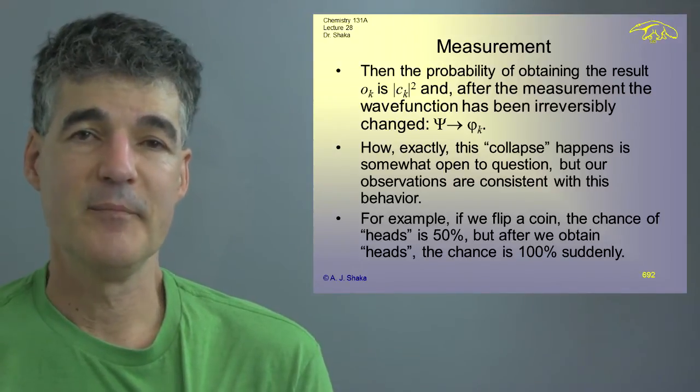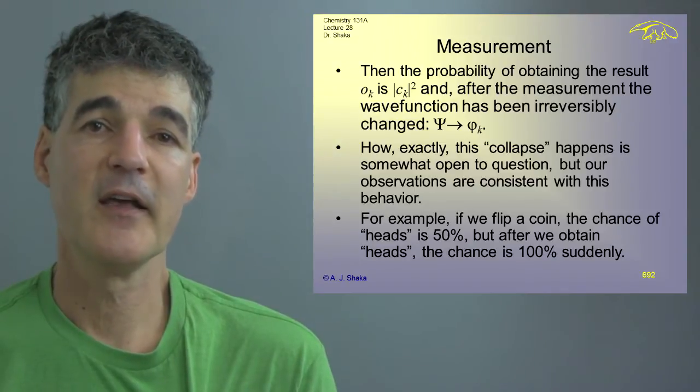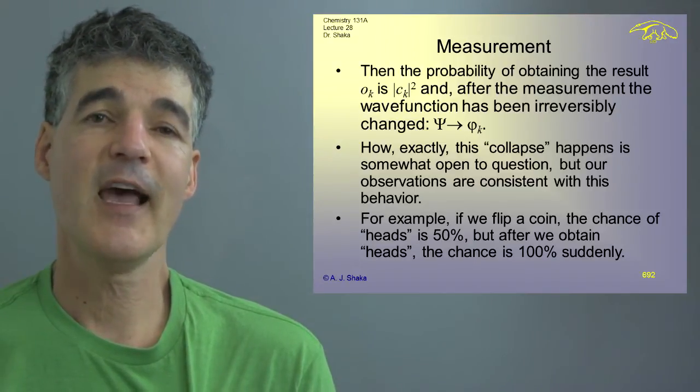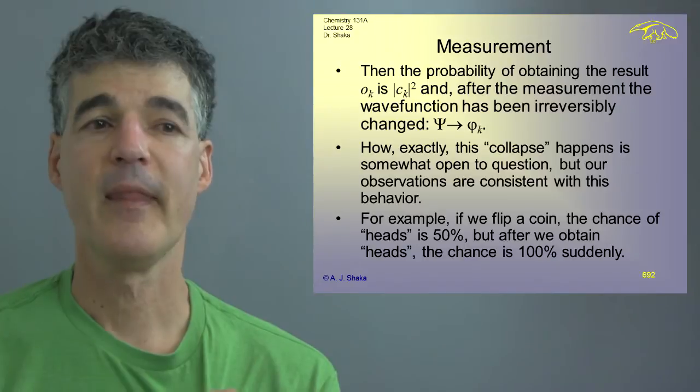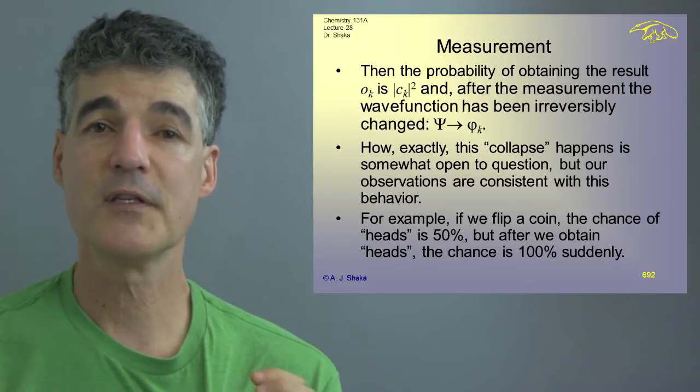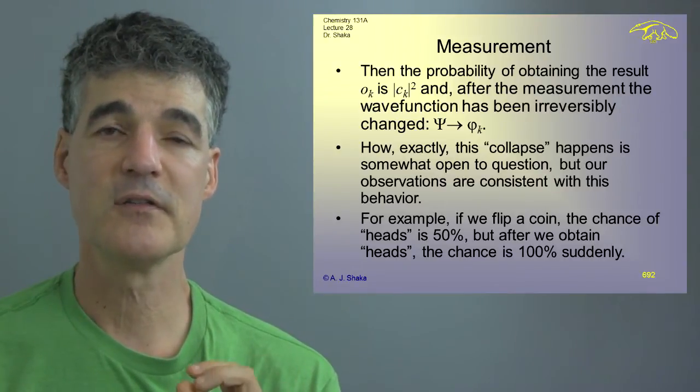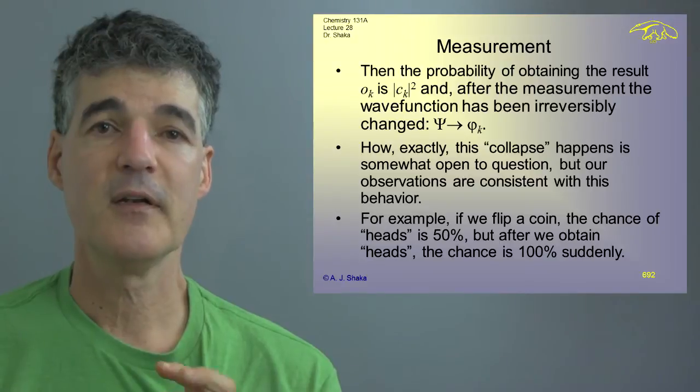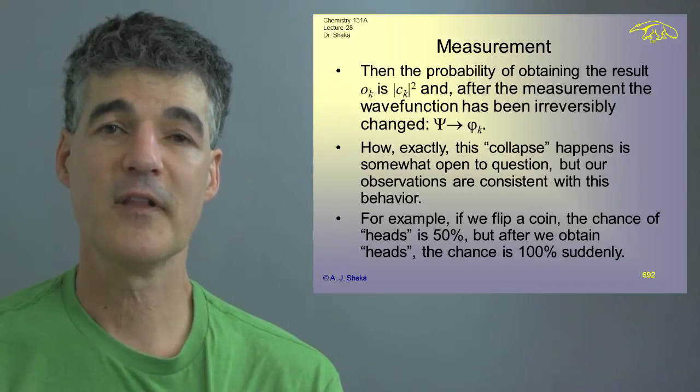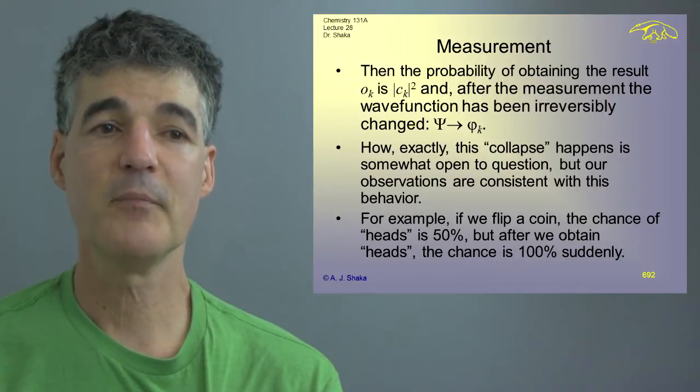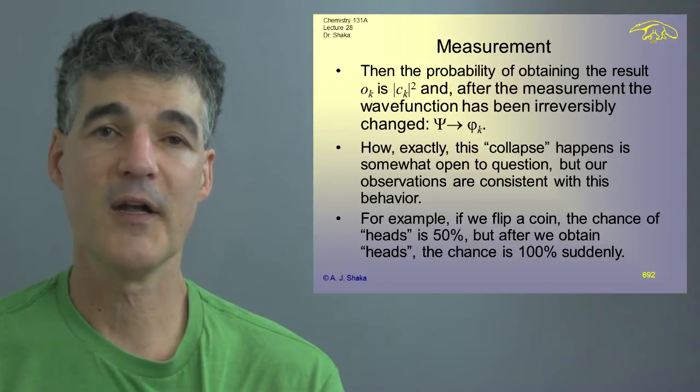But of course, that might not be quite the right way to look at it. It might be a bit more complicated than that. But you could ask exactly how does this collapse of the wave function happen? And actually, that's somewhat open to question like a lot of things in quantum mechanics. The actual equations are not open to question, but mechanisms and interpretations and reasons why certain things happen is open to question and some people temperamentally dismiss that as irrelevant and other people are quite interested in it.